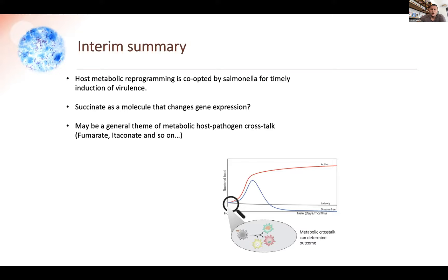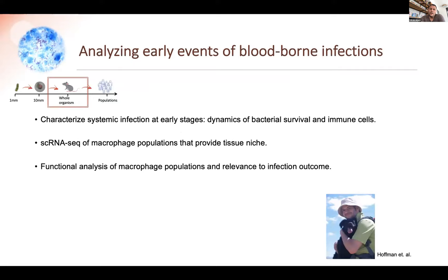The second part is led by Dotan, a talented PhD student. Here we are trying to look at early infection stages in animal models — in mice with Salmonella — and characterize what is going on in systemic infection at early stages in the spleen. We want to understand the dynamics of bacteria with host cells. Dotan applied single cell RNA-seq of macrophage populations after infection and then functional analysis, which indicates a nice collaboration between macrophage subsets and a specific subset that is the replication niche for Salmonella.